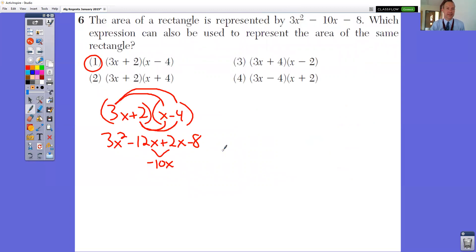In question number six, the area of the rectangle is represented by 3x squared minus 10x minus 8, which expression can also be used to represent the area of the same rectangle? So you want to know which of these, notice that they're just multiplying binomials to find the area, which of these equals this? So take and do FOIL.